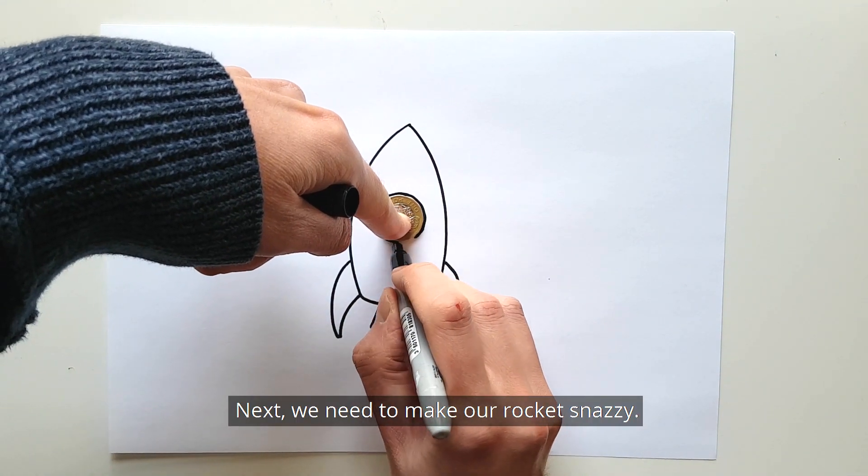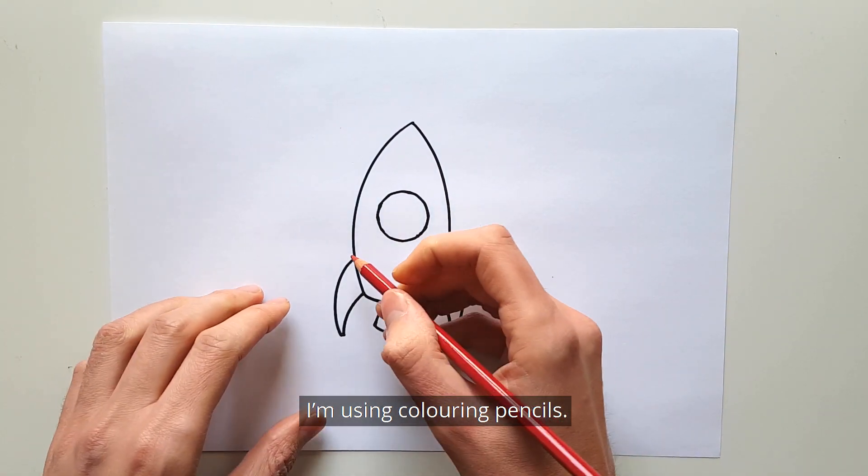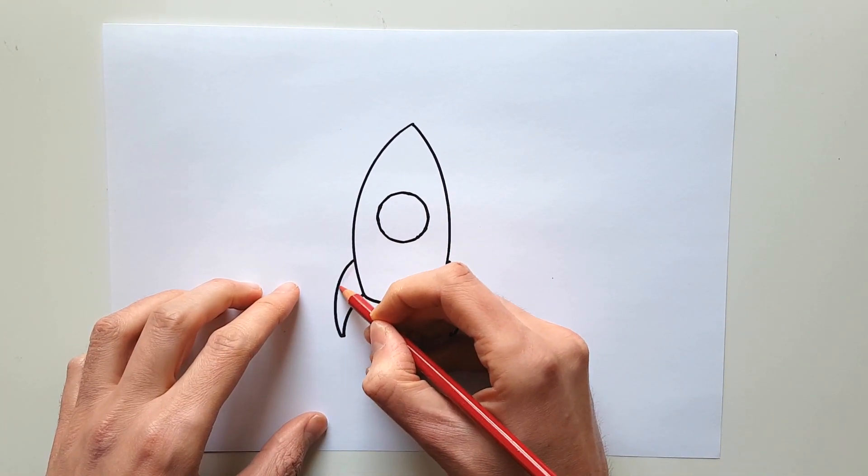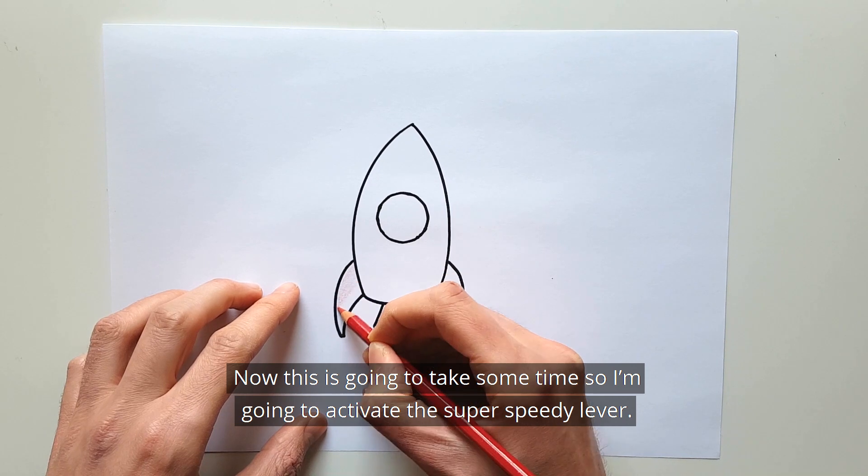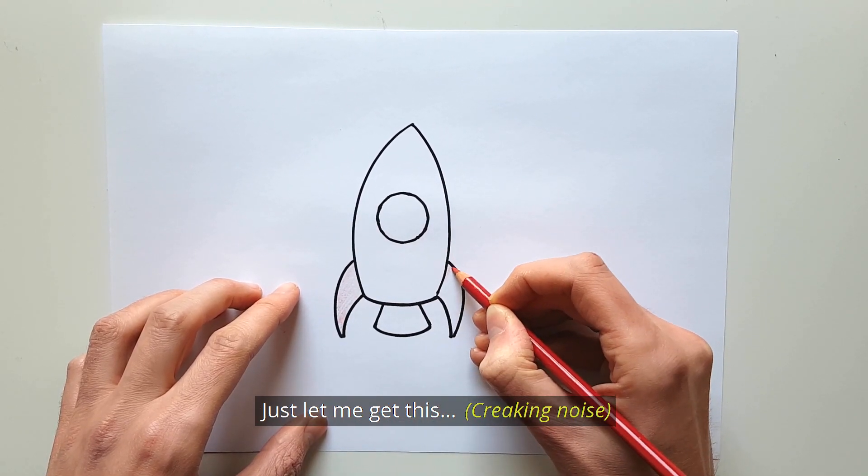Next we need to make our rocket snazzy, so let's color in our rocket right now. I'm using coloring pencils. Now this is going to take some time so I'll activate the super speedy lever, just let me get this down.